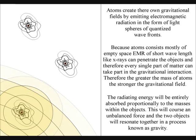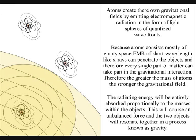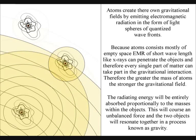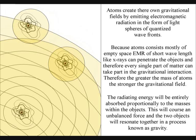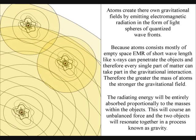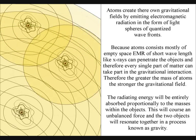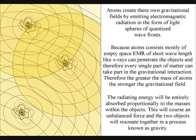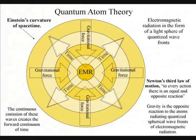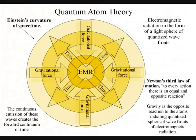Because atoms consist mostly of empty space, electromagnetic radiation of short wavelengths, like x-rays, can penetrate the objects, and therefore every single part of matter can take part in the gravitational interaction. This forms Einstein's curvature of space-time, and objects will freefall towards the greater mass with the slowest rate of time.